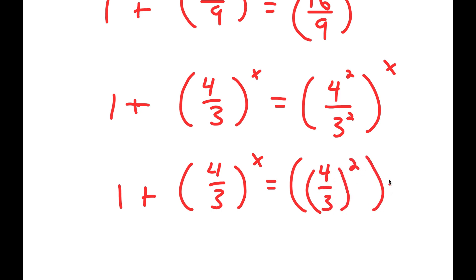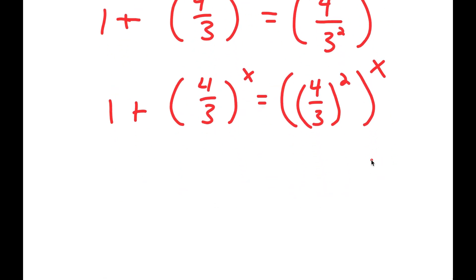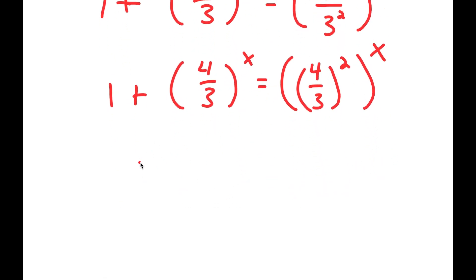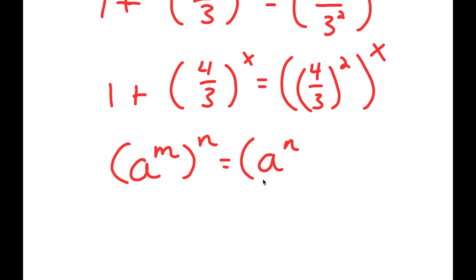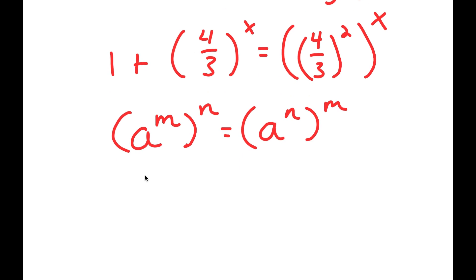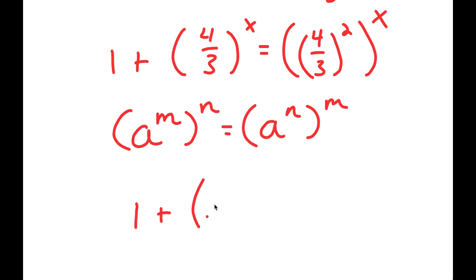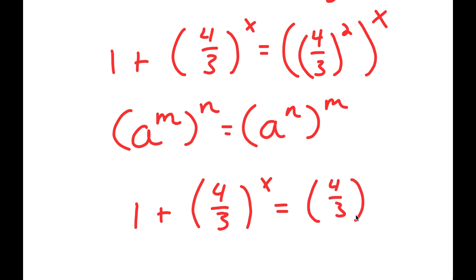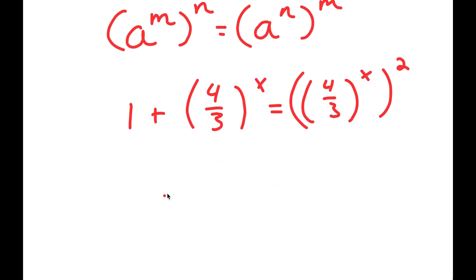Now 4 squared over 3 squared is the same thing as 4 over 3 squared, to the power of x. If I have something in the form a to the power of m to the power of n, this equals a to the power of n to the power of m — so 4 over 3 to the power of 2 to the power of x, I can rewrite that as 4 over 3 to the power of x to the power of 2.